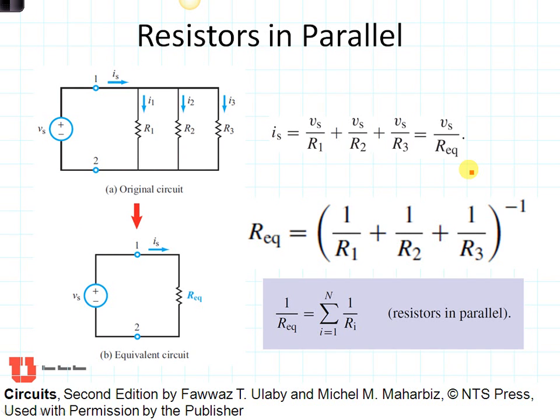Resistors that are in parallel add in a different way. The equivalent resistance is taken by, take the inverse of each resistor, one divided by R1 plus one divided by R2 plus one divided by R3, and invert all of that, and that's going to be the equivalent resistance. So no matter how many resistors we have, we can find the equivalent resistance for this circuit right here.